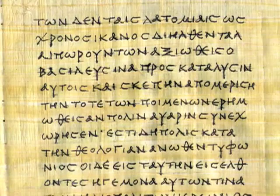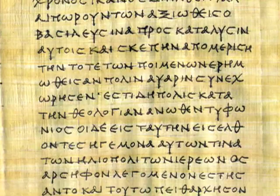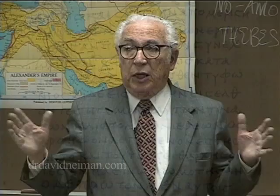That historian was Manetho, an Egyptian priest who wrote a history of Egypt in Greek. He knew Egyptian history and could read hieroglyphics — he was a scholar of Egyptian history. In his history, he decided to divide Egypt into the royal families that ruled it, and he called them the dynasties. That is how we date Egyptian history.